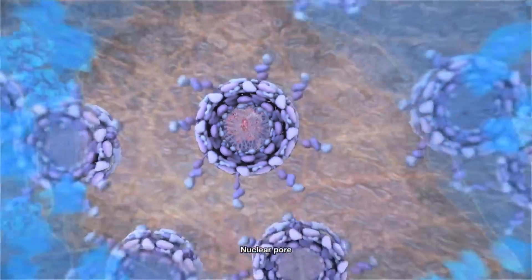We are now pulling away from a chromosome, out through a nuclear pore, which is a gateway through the nuclear membrane.